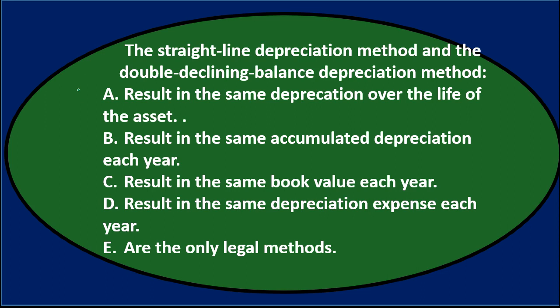First question: The straight line depreciation method and the double declining depreciation method — A, result in the same depreciation over the life of the asset; B, result in the same accumulated depreciation each year; C, result in the same book value each year; D, result in the same depreciation expense each year; or E, the only legal method.